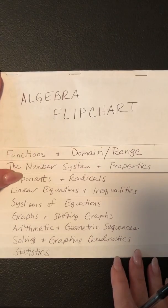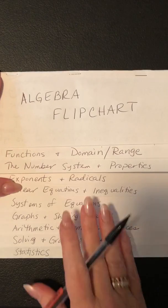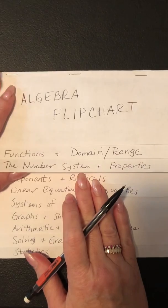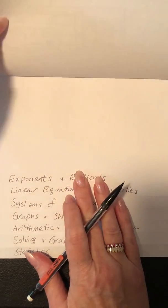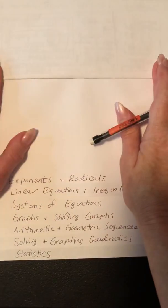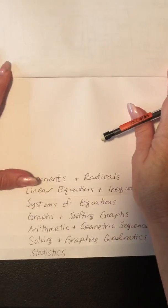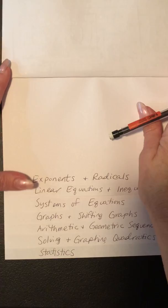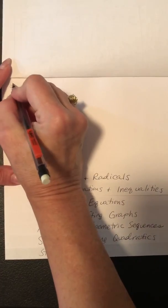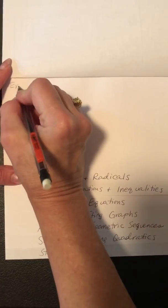Hello again. This is the flip chart part 3. We're going to do exponents and radicals. Exponents are the little numbers in the upper right-hand corner, so let's go ahead and do exponents first.